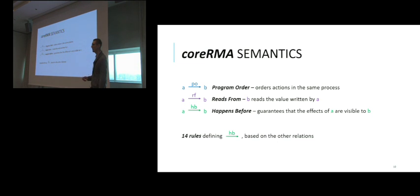The first relation is program order, which orders actions issued by the same process. The second relation is the read from relation from a write to a read. This means that b reads the value written by a. And finally, the happens before relation. A happens before b if it is guaranteed that the effects of a are visible to the action b. Finally, we constructed four axiomatic rules that define the happens before relation based on the other relations.